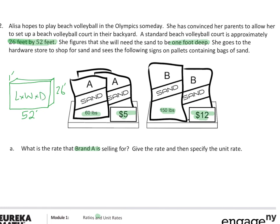Let's find the rate for part A. When we find the rate, we just divide across. So we do 60 divided by 5: 60 pounds divided by 5 dollars gives us 12. That rate's unit is pounds per dollar. So I get 12 pounds per dollar I spend — every dollar I spend, I'm getting 12 pounds. I know that because my bigger value is pounds, and the smaller value I got down to 1 by dividing is dollars.